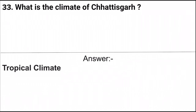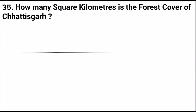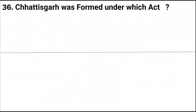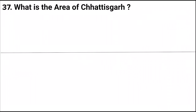Next question: What is the climate of Chhattisgarh? Answer: Tropical climate. Next question: What is the most followed religion in Chhattisgarh according to the 2011 census? Answer: Hinduism. Next question: How many square kilometers is the forest cover of Chhattisgarh? Answer: 56,610.57 square kilometers. Next question: Chhattisgarh was formed under which act? Answer: Madhya Pradesh Reorganization Act.